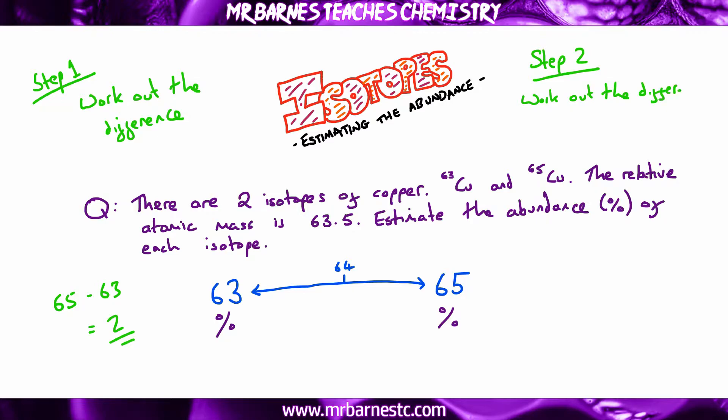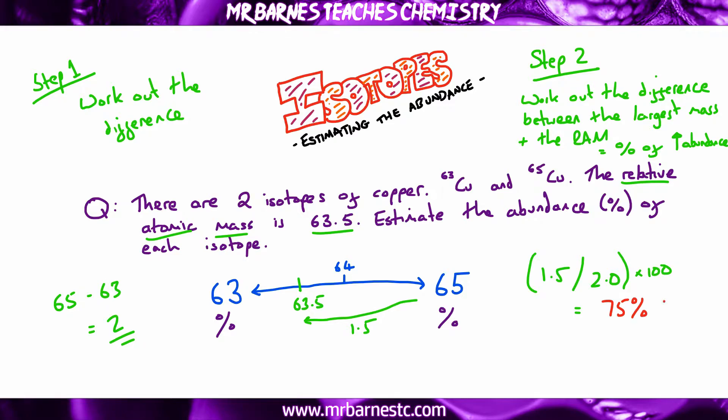Now the easiest way I find to work out what the percentage is of my largest isotope is to work out the difference between my largest mass and the relative atomic mass. And then this can work out the percentage of my highest abundance. So I'm going to draw my 63.5 back on this line down here. And then I'm going to work out the difference between my 65 and 63.5, which is 1.5. Now to figure out the percentage, all I then have to do is take that number and divide it by the total difference. So divide it by 2, which we worked out in step 1. And then to turn it into a percentage, all we do is times that by 100. So 1.5 divided by 2.0 times by 100 comes out to 75%. So I've got 75% of my copper 63.